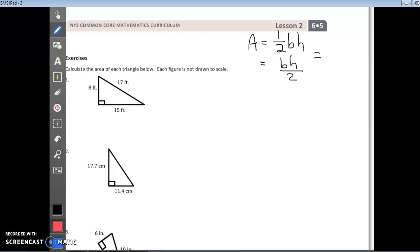Today we're going to be working on lesson two from module five, sixth grade math. We're going to be covering the area of right triangles. Yesterday we already talked about area of rectangles and squares. We also talked about area of parallelograms.